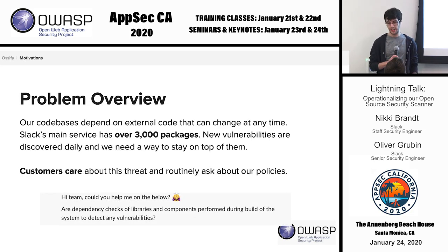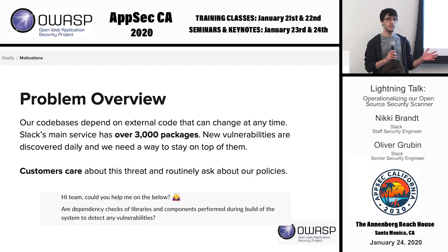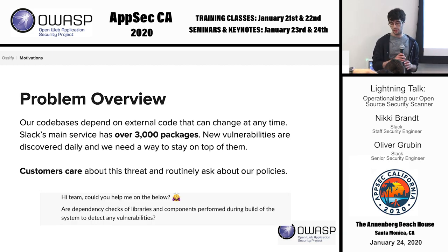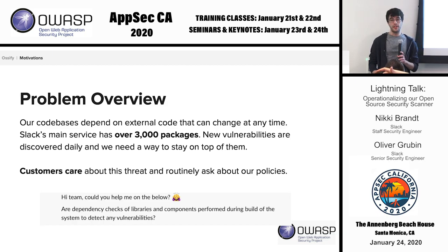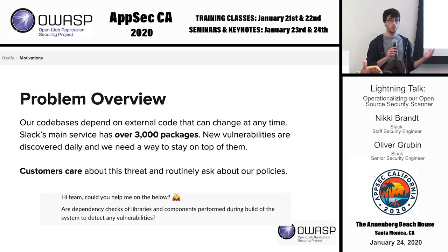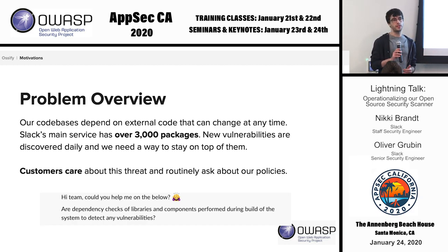We have a problem at Slack. We use a bunch of open source dependencies, probably like everyone who runs an application in this room. Slack is written on the back end — originally PHP, now Hacklang, which is kind of a variant of PHP. On the front end, we use a bunch of JavaScript, React, and a million other things. So unsurprisingly, we have a ton of dependencies. Slack's main service has around 3,000 packages. The product security team clearly cannot manually assess every one of those and decide if there's an issue or something going wrong. We needed a way to do this automatically and track vulnerabilities as they're reported.